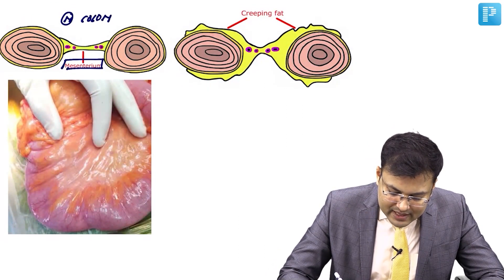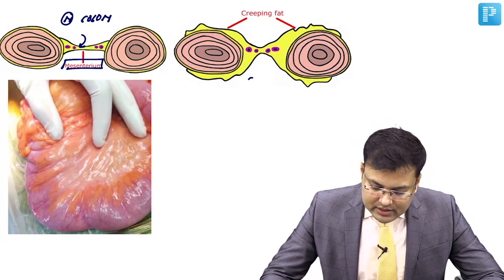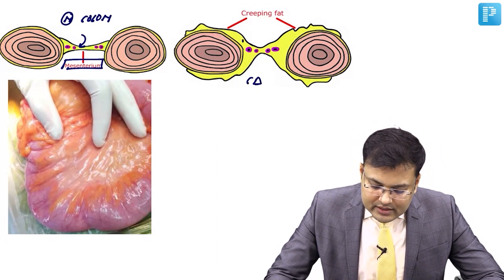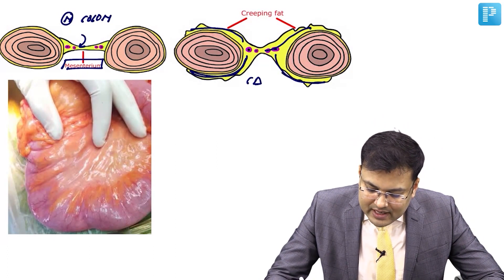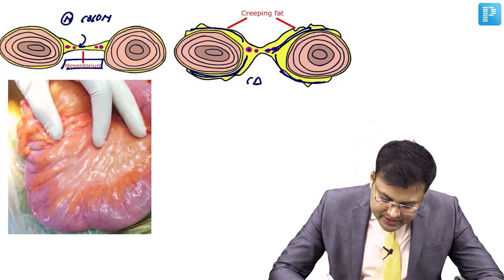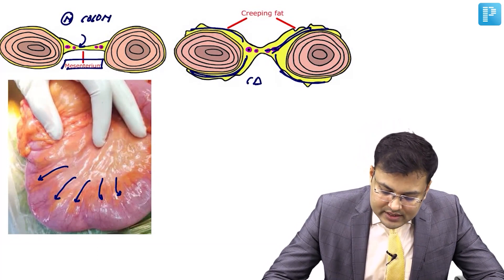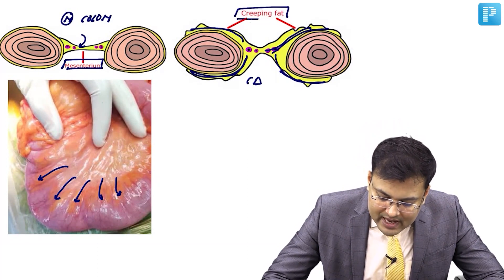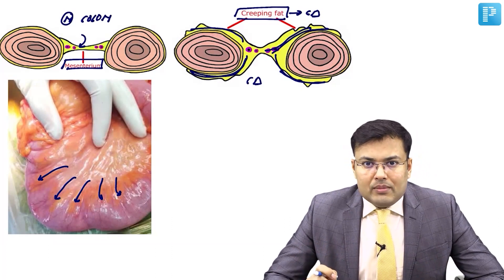This is the normal colon showing the mesentery and the yellow fat within it. In Crohn's disease, you can see circumferential growth of mesenteric fat around the bowel. This is known as creeping fat, and it is one of the characteristic features of Crohn's disease.